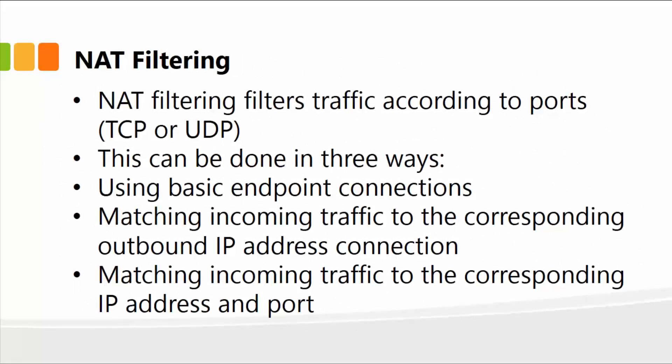We can also have network address translation filtering, also known as NAT filtering, which you can set up on your router. It filters traffic according to ports — TCP ports or UDP ports (User Datagram Protocol or Transmission Control Protocol). This can be done in three ways: first, using basic endpoint connections; second, matching incoming to the corresponding outbound IP address connections; and third, matching incoming traffic to the corresponding IP address and port. This is yet another way to filter and ensure you are deploying a certain type of firewall.